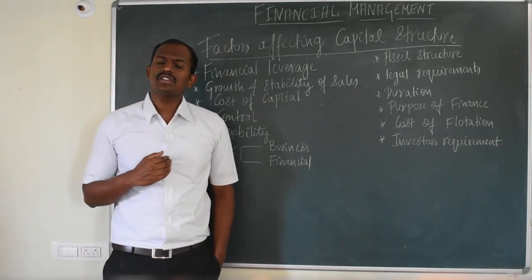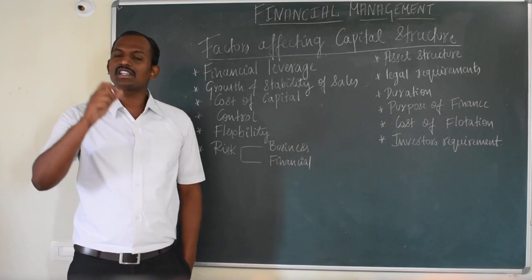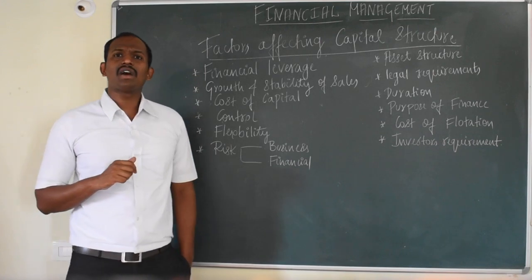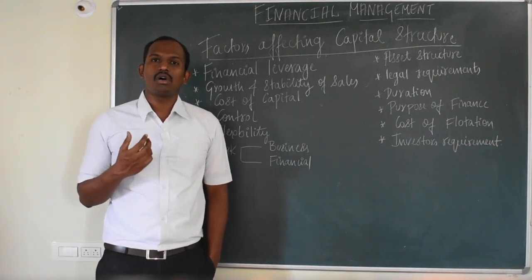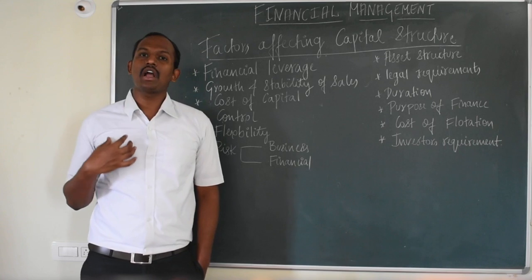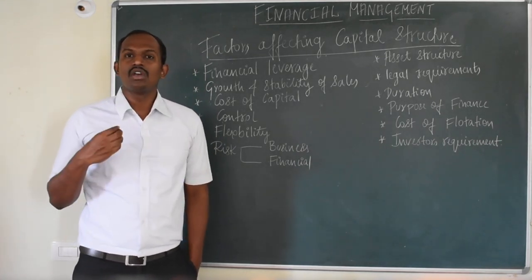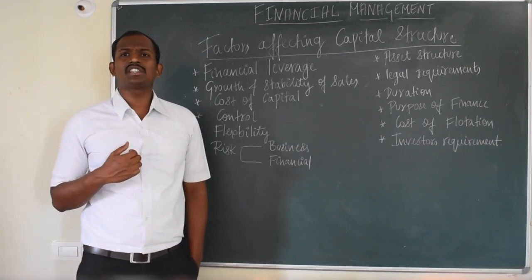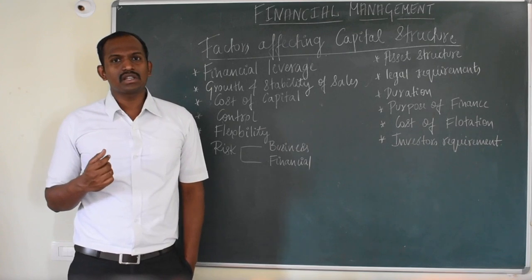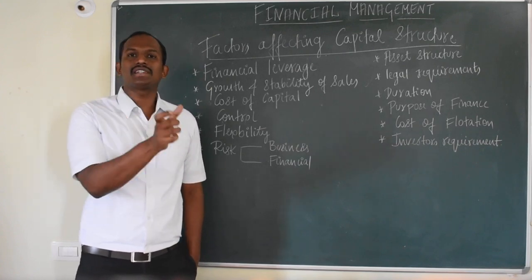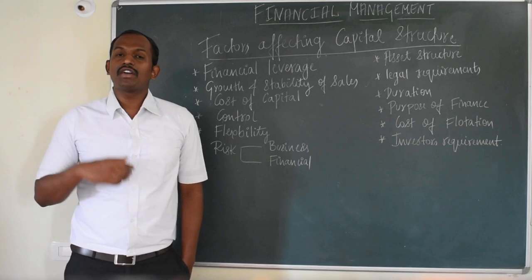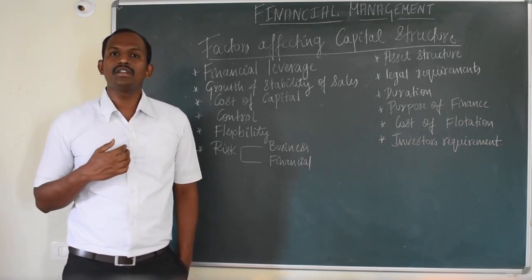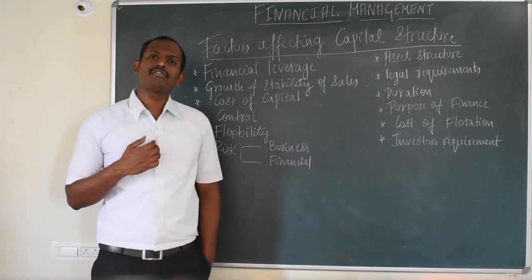The seventh factor is asset structure, which refers to the proportion of fixed assets and current assets in total assets. The eighth factor is legal requirements — the clauses or regulations framed by the government to issue securities for public subscription. The ninth factor is duration — if a company requires finance for a shorter time, it can go for debt capital; if finance is needed for a longer duration, the company is advised to go for equity capital.